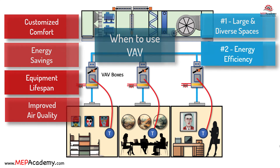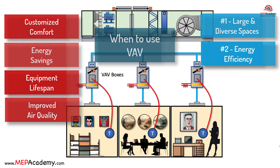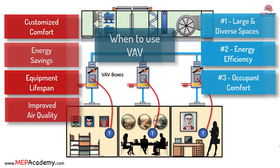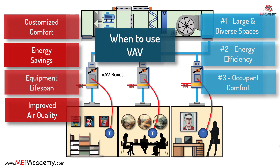2. Energy Efficiency Goals: when prioritizing energy efficiency and sustainability, VAV systems are the preferred option. They minimize energy consumption by supplying only the necessary airflow to each zone, reducing operating costs and carbon emissions. 3. Occupant Comfort Matters: if maintaining precise temperature control and occupant comfort is crucial, VAV systems offer superior performance, ensuring consistent comfort levels throughout the building.